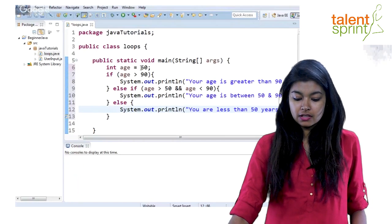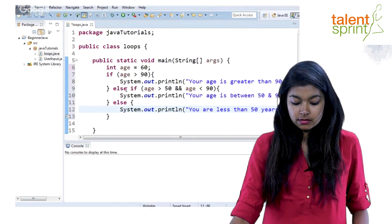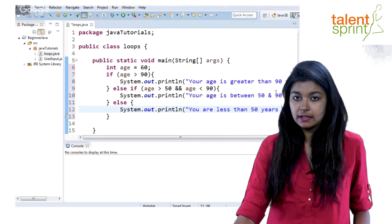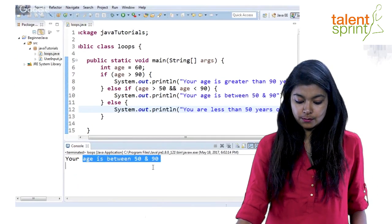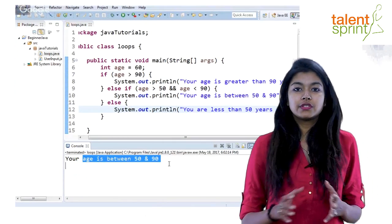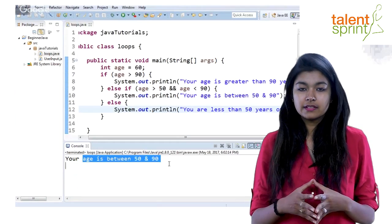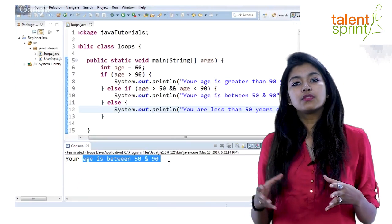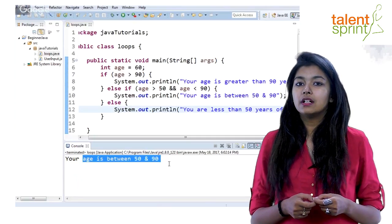So since we have initialized our age here to 60, we should enter into this else-if and our output should be your age is between 50 and 90. Let's save the program and run it. Your age is between 50 and 90. So this if-else and nested ifs and all those if-else constructs are used for testing these conditions through the course of your program whenever you need a check of a condition.